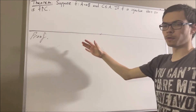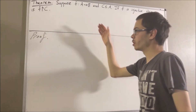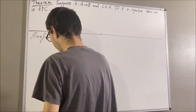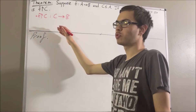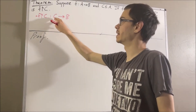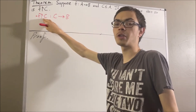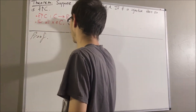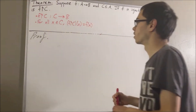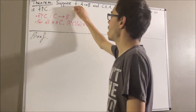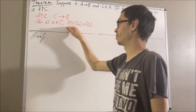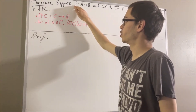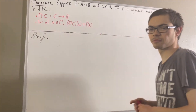Now before we get to the proof, if you recall, the restriction of f to C is a function from C to B. And we have that for every element x in C, the restriction of f to C evaluated at x is equal to f evaluated at x. So f and the restriction of f to C essentially do the same thing. The only difference is we're restricting the domain of f to the domain C.